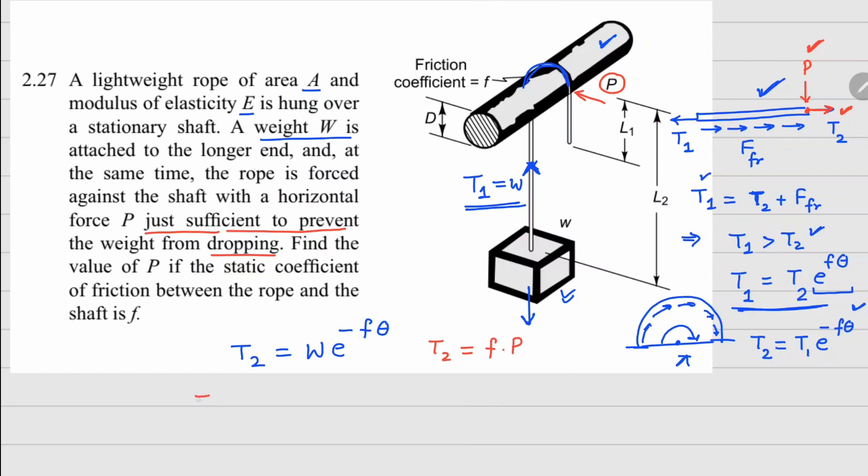Your P value is going to be T₂ divided by f. If I use the value of T₂ that we have calculated, your P value is 1 over f times W times e to the power minus f theta, which equals π in this case.